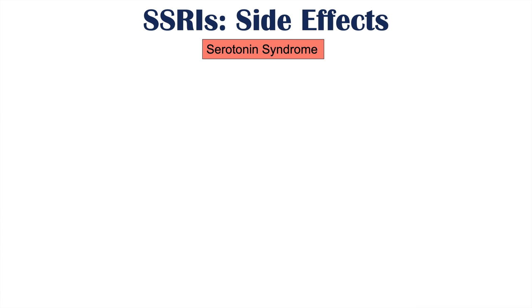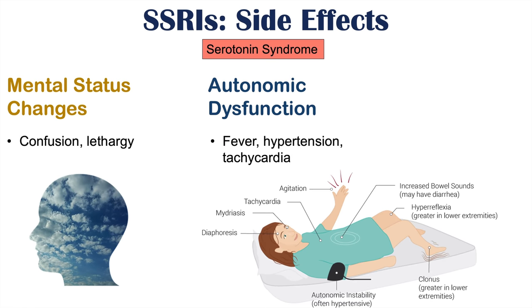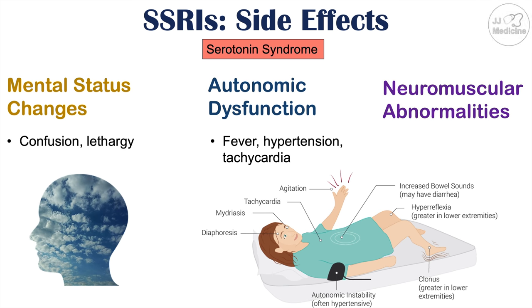Now, if there is too much SSRI use or too high a level of serotonergic activity, this can lead to serotonin syndrome. Serotonin syndrome has particular symptoms, including mental status changes like confusion and lethargy, autonomic dysfunction including fever, hypertension, and tachycardia — so high blood pressure, a fever, and a heart rate greater than 100 beats per minute — and neuromuscular abnormalities including clonus and tremor. Serotonin syndrome also causes increased gastrointestinal issues like diarrhea.